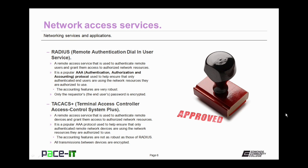Another network access service is RADIUS — Remote Authentication Dial-In User Service. RADIUS is a remote access service used to authenticate remote users and grant them access to authorized network resources. It is a popular AAA protocol — that's authentication, authorization, and accounting — used to help ensure that only authenticated end users are using the network resources they are authorized to use. The accounting services of RADIUS are very robust. The only drawback to RADIUS is that only the requester's password is encrypted.